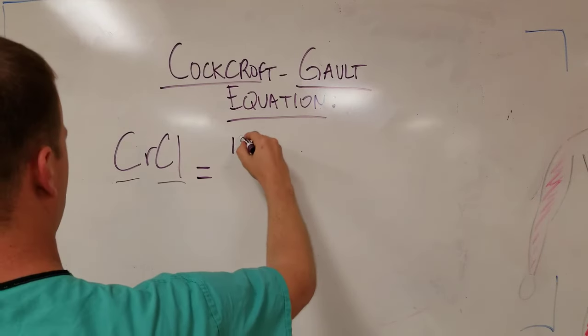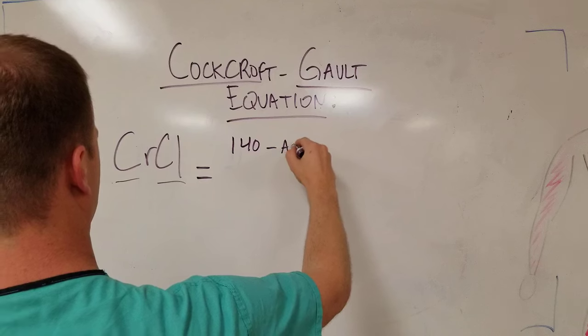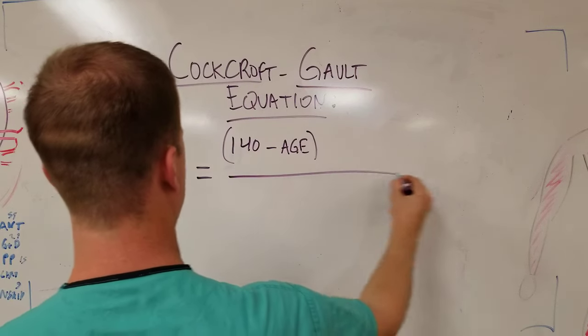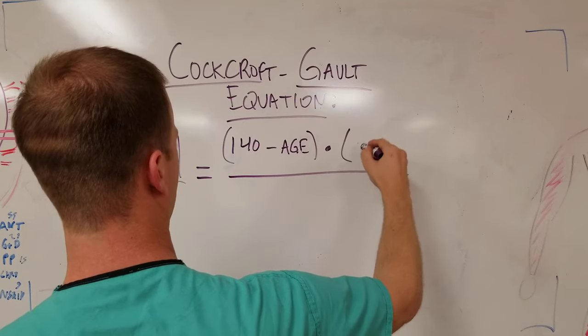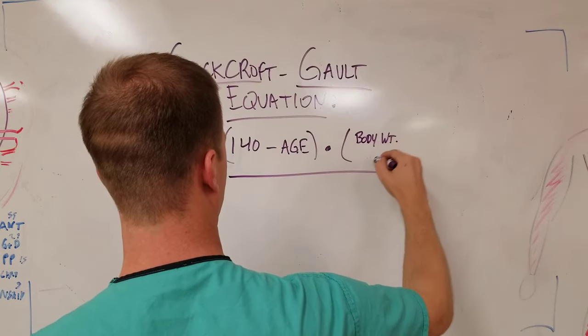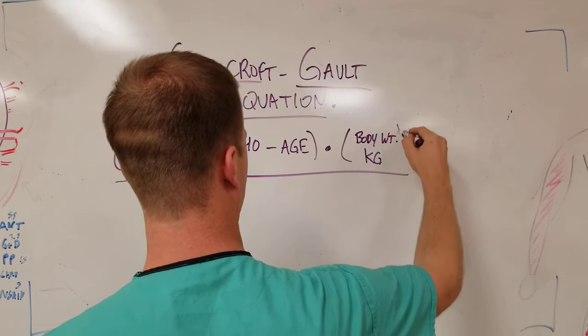So first things first, you're gonna do 140 minus the patient's age. Too easy, right? You're then gonna multiply that by their body weight in kilograms.